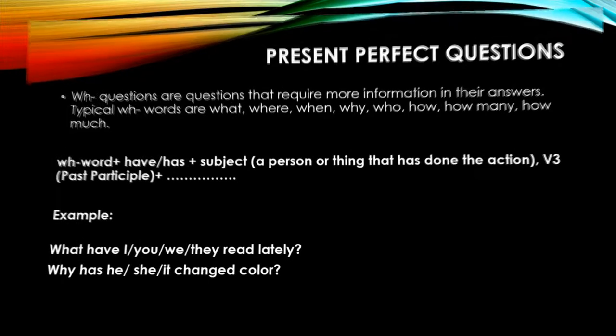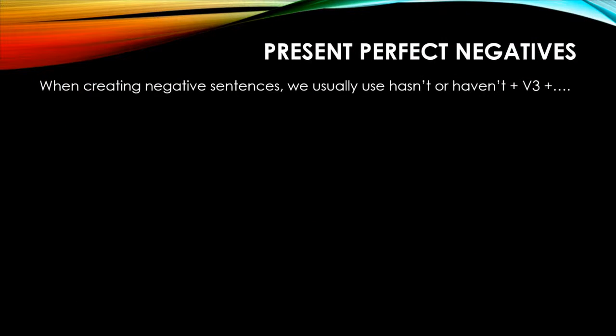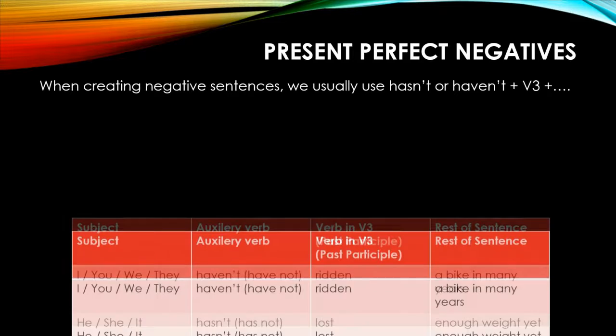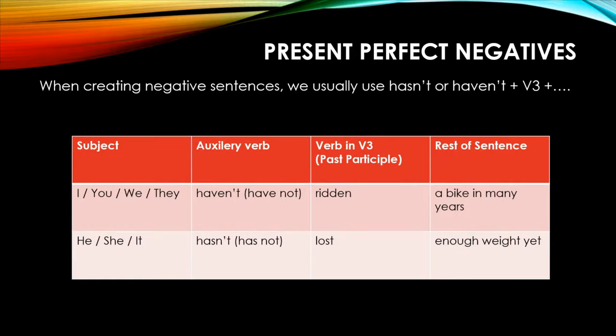Now we'll see present perfect negatives. When creating negative sentences, we usually use 'hasn't' or 'haven't' plus the past participle of the verb. Look at this table: subject, auxiliary verb (hasn't/haven't), verb in past participle form, and the rest of the sentence.